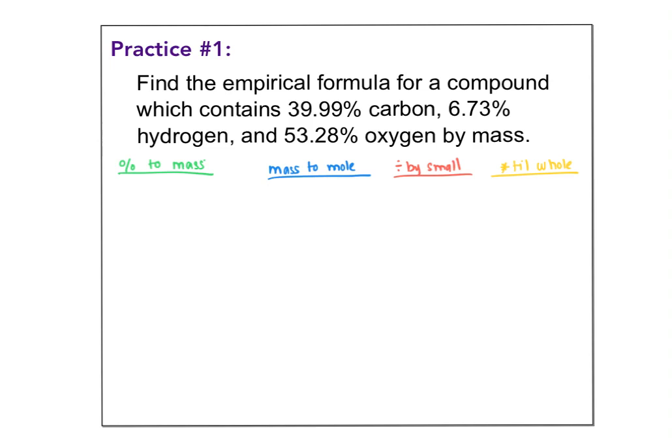Here's a classic empirical formula problem. Find the empirical formula for a compound which has 39.99% carbon, 6.73% hydrogen, and 53.28% oxygen by mass. First step of the rhyme — percent to mass. I'm going to take each percentage and turn it into grams, assuming the whole chemical weighs 100 grams. So that's 39.99 grams carbon, 6.73 grams hydrogen, and 53.28 grams oxygen.